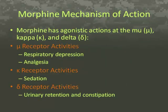As mentioned previously, morphine has agonistic effects on the mu, kappa, and delta receptors. The mu receptor is responsible for respiratory depression and analgesia. Kappa receptor stimulation results in sedation. The delta receptor causes urinary retention and decreased GI motility, resulting in constipation.